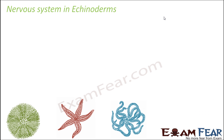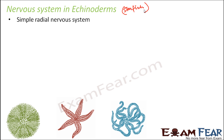The next group is the echinoderms. Under echinoderms come sea urchins, starfish, and feather stars. Most of them have radial symmetry, so they have a simple radial nervous system, because the nervous system needs to be radial in order to reach the different parts of the body. A modified nerve net is present, similar to the nerve net seen in cnidarians, which is formed by multiple small nerve cells.